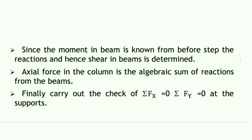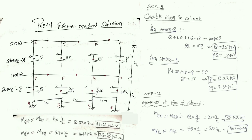In Step 4, we calculate the shear in the beams using equilibrium at the joints — the summation of moments in the beams equals the summation of moments in the columns. In Step 5, we calculate the axial forces in the different columns using the results from the above four steps.